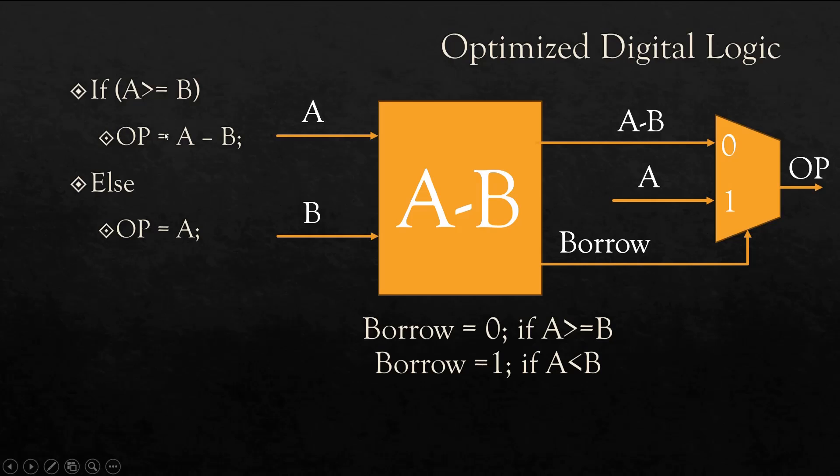Now let us consider this first condition. If A is greater than or equal to B, then borrow is zero. So borrow is zero, and what should be my output? Output should be A minus B. So output should be A minus B. If borrow is one, that means else condition, output should be A. So we will apply A here, where this will be passed to output because borrow is one. So this input will be passed to the output. So this way we have eliminated the comparator logic.